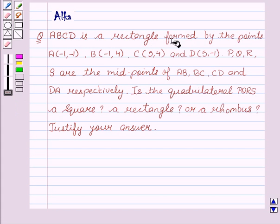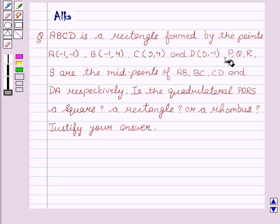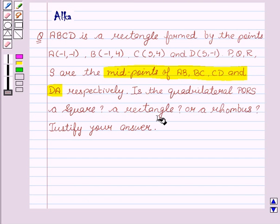ABCD is a rectangle formed by the points A with coordinates (−1, −1), B with coordinates (−1, 4), C with coordinates (5, 4), and D with coordinates (5, −1). P, Q, R, S are the midpoints of AB, BC, CD, and DA respectively. Is the quadrilateral PQRS a square, a rectangle, or a rhombus? Justify your answer.